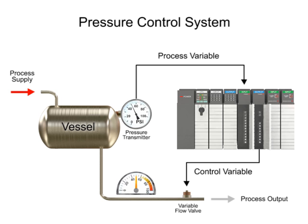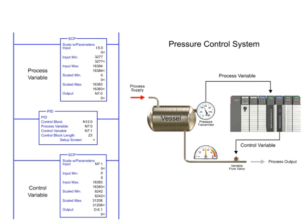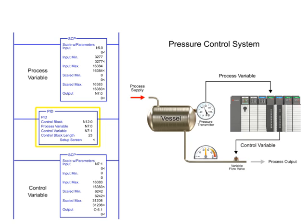In the following program example, the PID instruction is used to control pressure of a vessel. Using a pressure transmitter as the process variable and a flow valve as the control variable, the set point is maintained at 50 PSI.